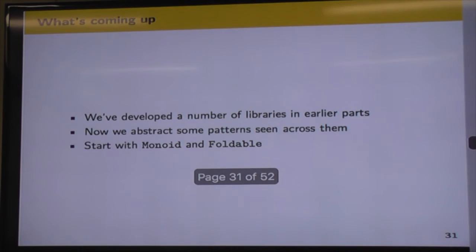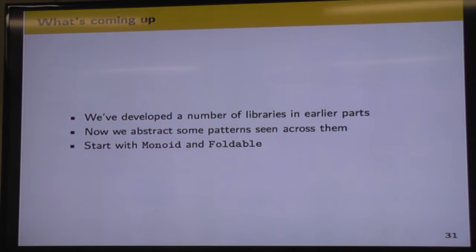Part 3. So I just thought I'd give a little intro on the third part rather than just diving into it. So we've developed a number of libraries up until this point in the book. And now Part 3 focuses on abstracting some of those patterns that we've seen in those earlier libraries. And tonight, as I said, we're starting with Monoid, and they also sneak Foldable in there as well.